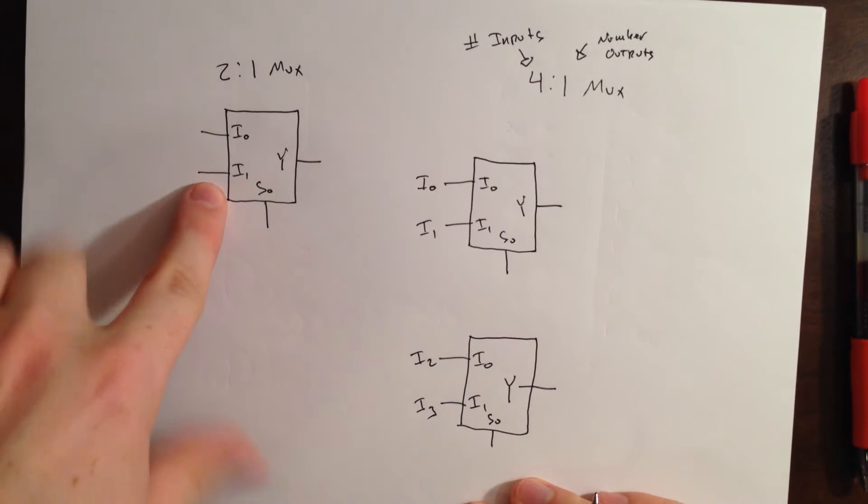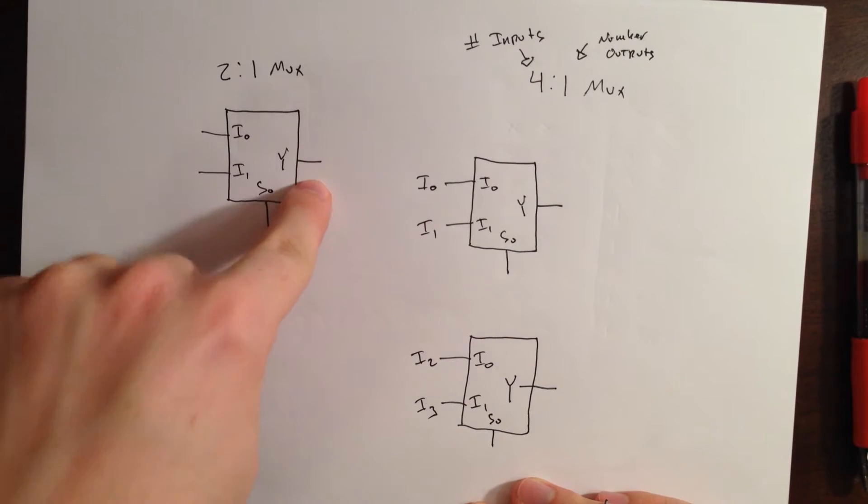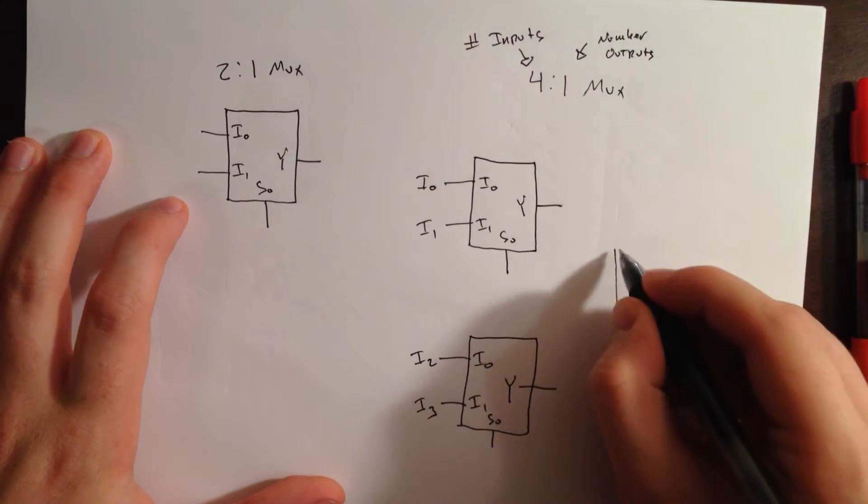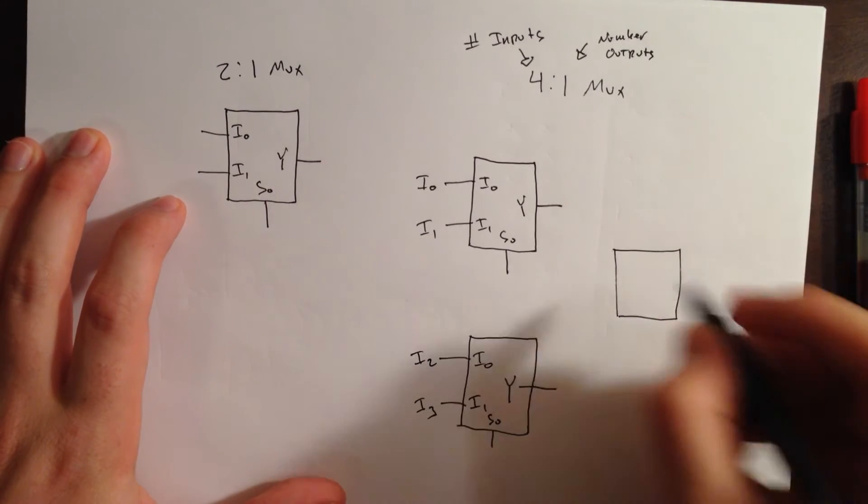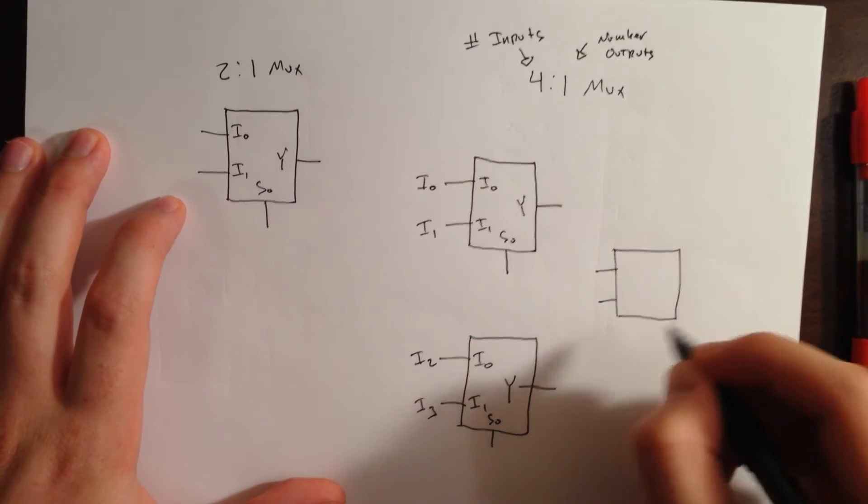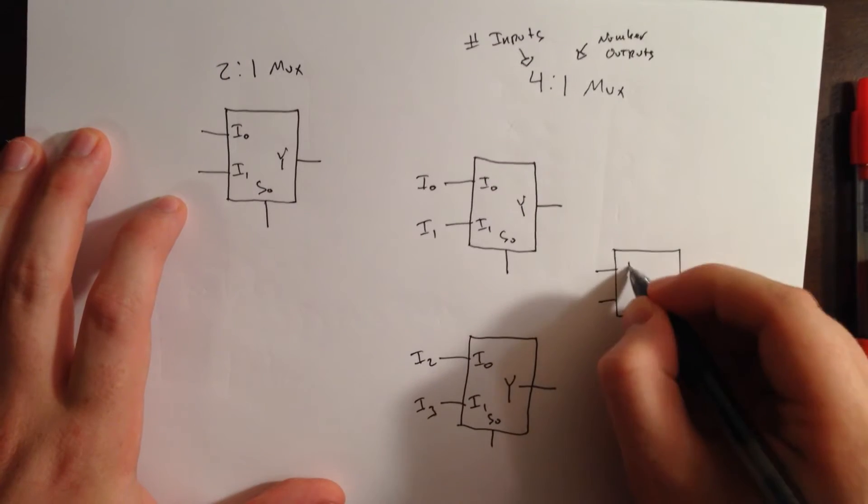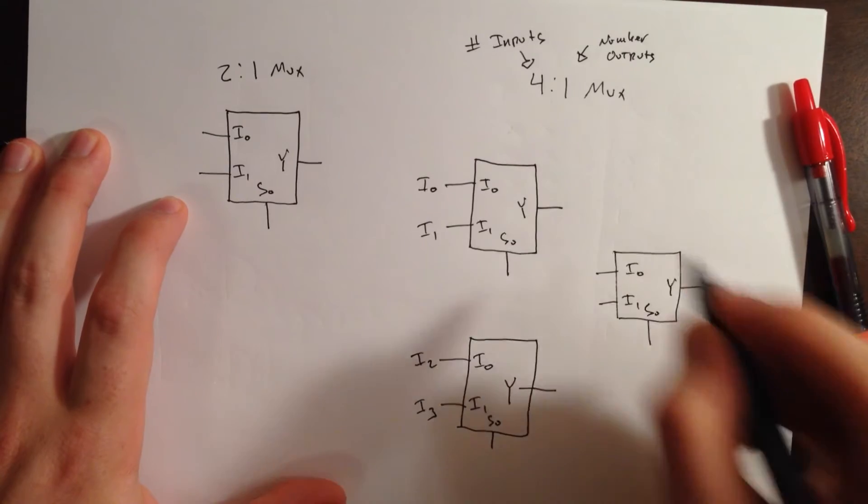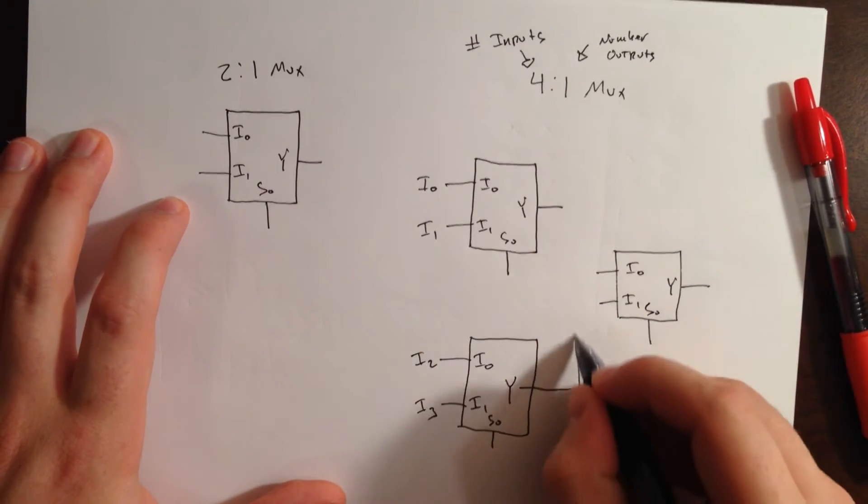But, we have 2 inputs on our 2:1 multiplexor and 1 output on our 2:1 multiplexor. So, we're going to go ahead and draw one more 2:1 multiplexor with our same inputs. And, we'll connect these.